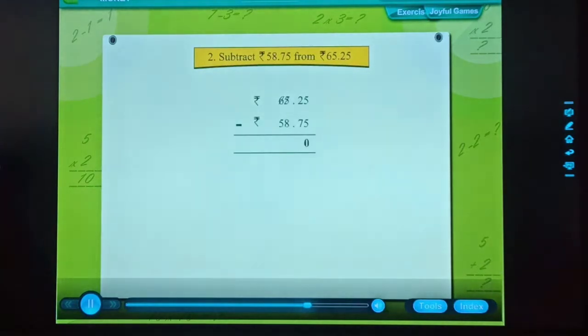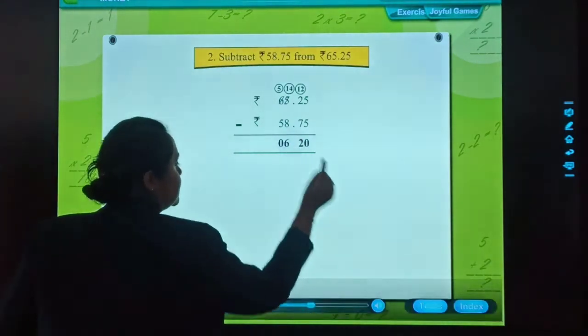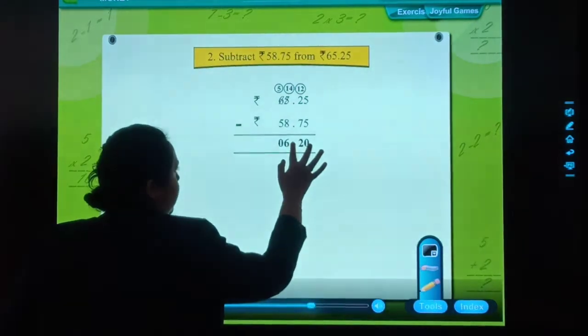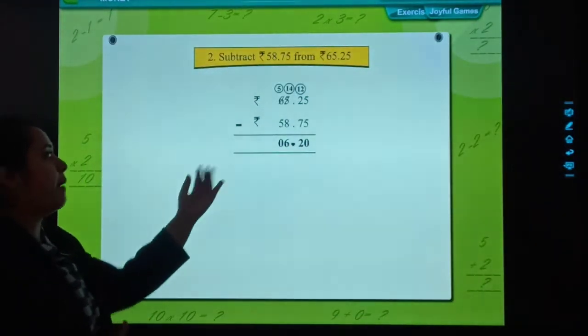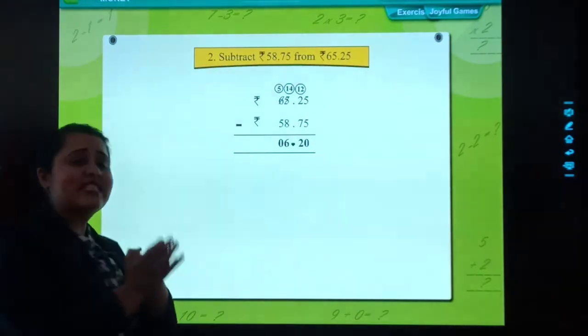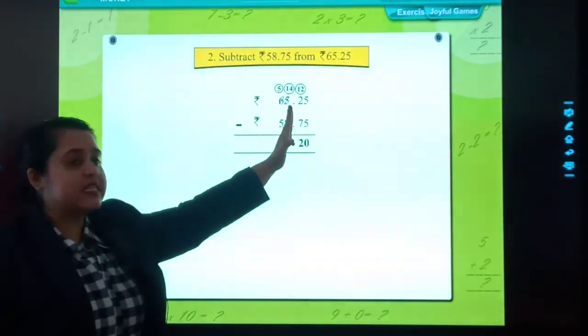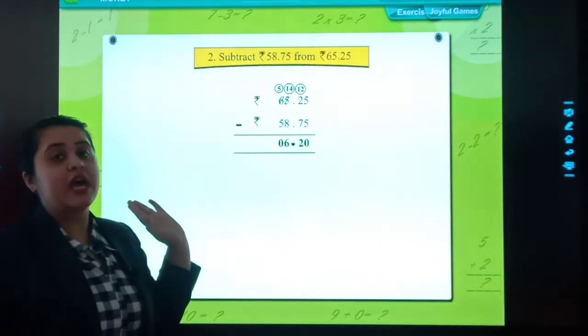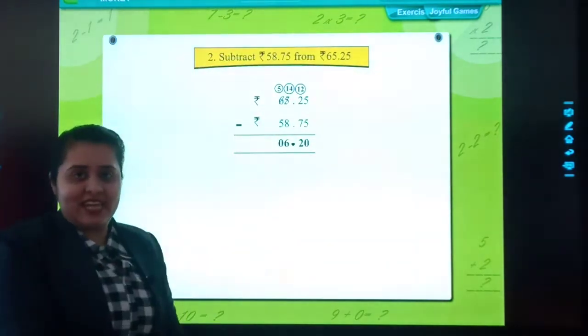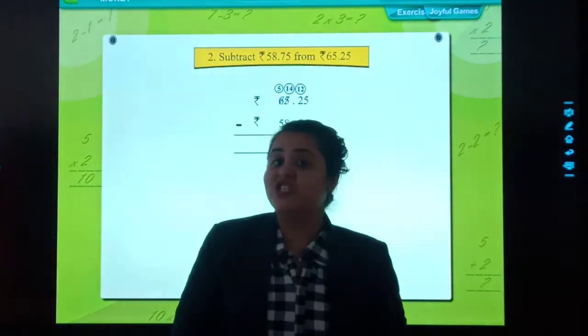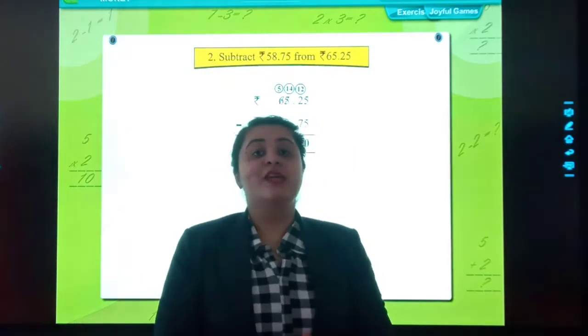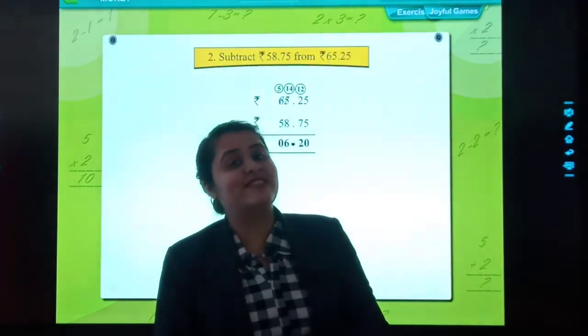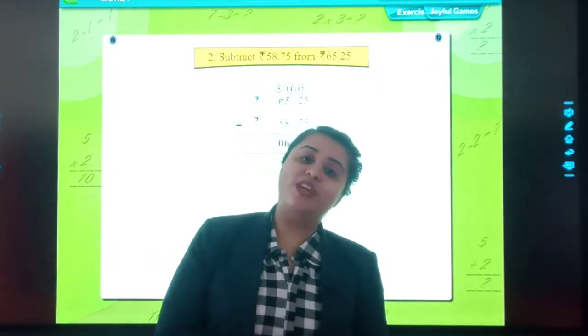Subtract rupees 58 and 75 paise from rupees 65 and 25. In this also you will be placing decimal here. Understood students? This is subtraction. We solve it the same way. For example in this we have shortage, we will take carry from nearby. Whatever subtraction you have learned is the same. Just you need to remember about the decimal. Okay students, let's move to the worksheet.